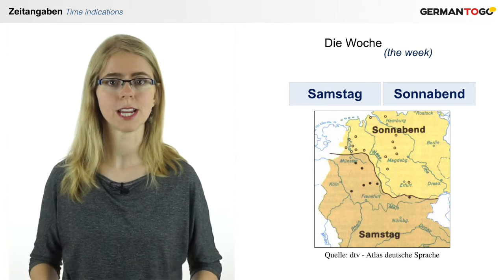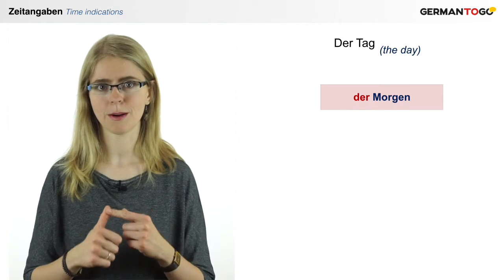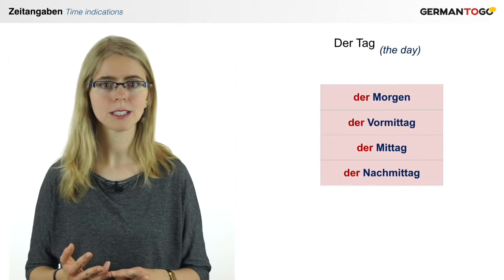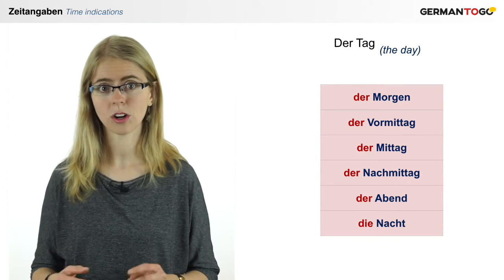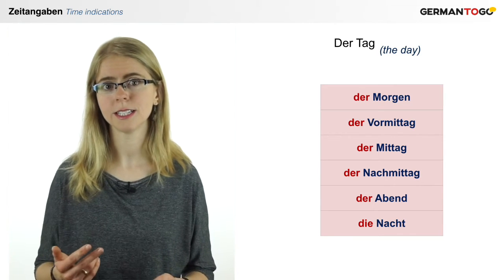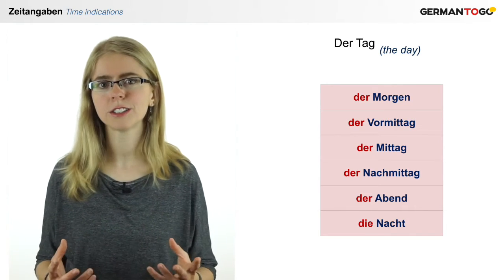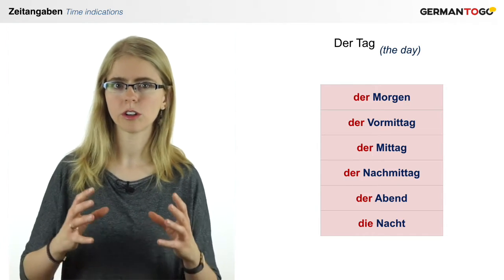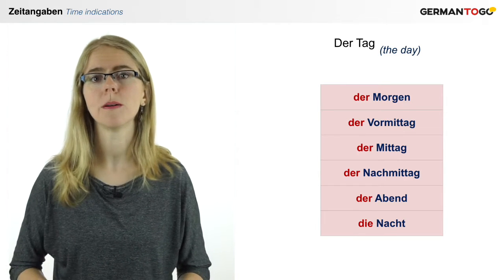And now the different times of the day — der Tag. Here we have der Morgen, der Vormittag, der Mittag, der Nachmittag, der Abend, and die Nacht. All of them are masculine except for Nacht which is feminine. Der Morgen means the morning, and der Vormittag kind of means the pre-noon — in English we would also say the morning, but in German we make the distinction. Der Morgen is really early morning, let's say until eight or nine o'clock, and after that starts der Vormittag.